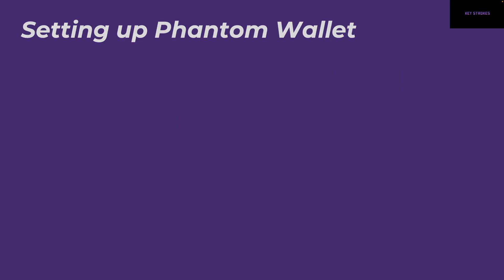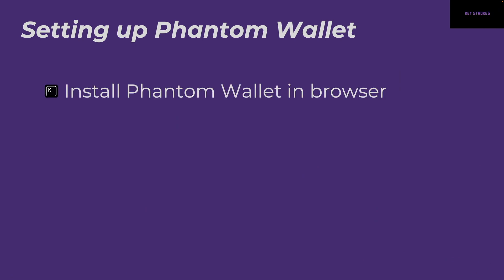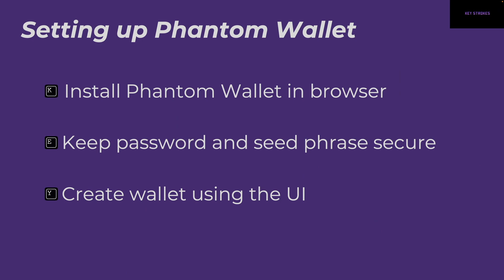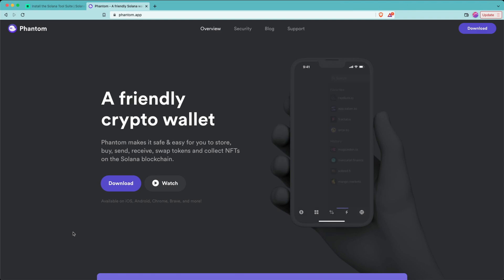Now let's set up Phantom wallet. This is the easiest wallet to set up and most of you might already have done this in the past. This wallet is installed in the browser — there are several such wallets; I'm just using Phantom as an example. Step one will be to install the wallet in the browser. When you set up your wallet you'll have to give it a password and a seed phrase — make sure you keep them secure. If anybody gets their hands on the seed phrase or if you lose it, you cannot recover your accounts.